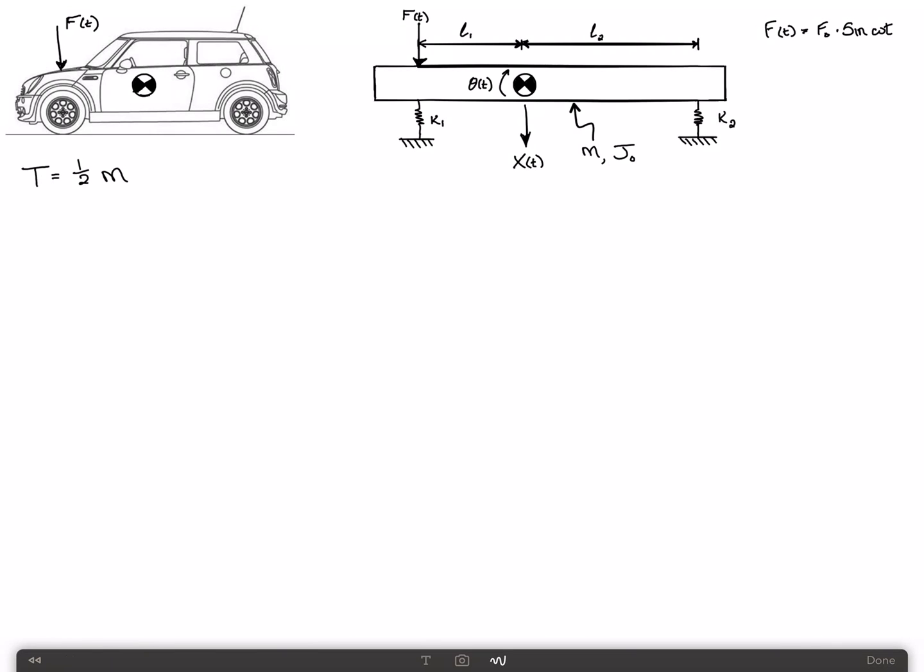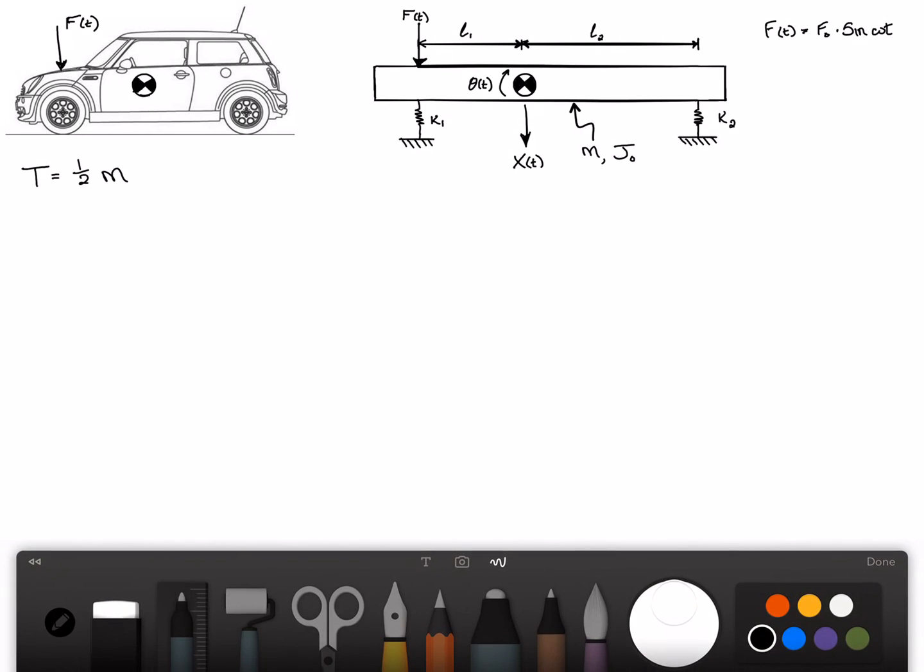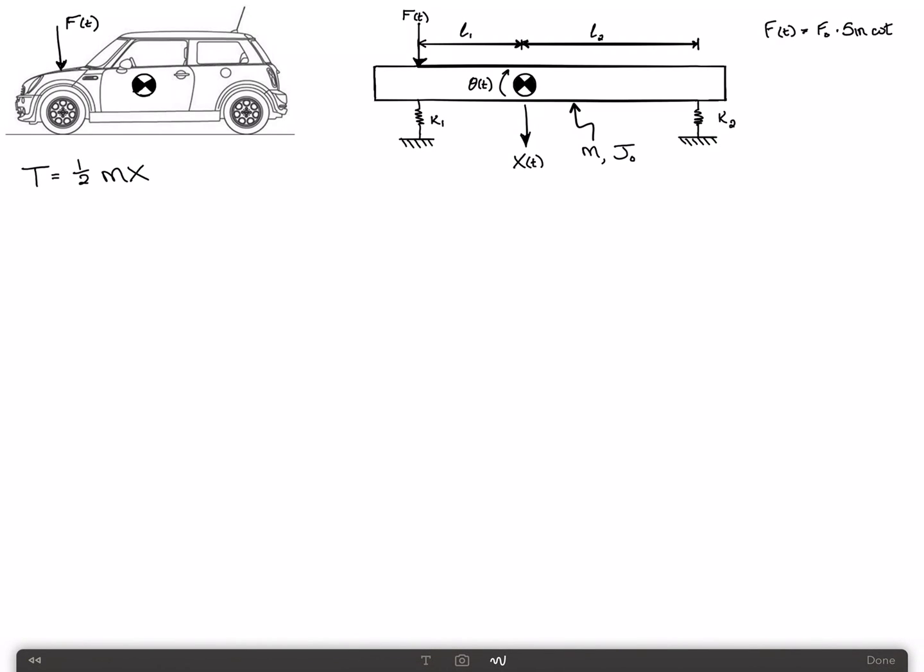So the kinetic energy can be written as T equals one-half times M X dot squared, plus one-half J sub zero theta dot squared. Very simple.